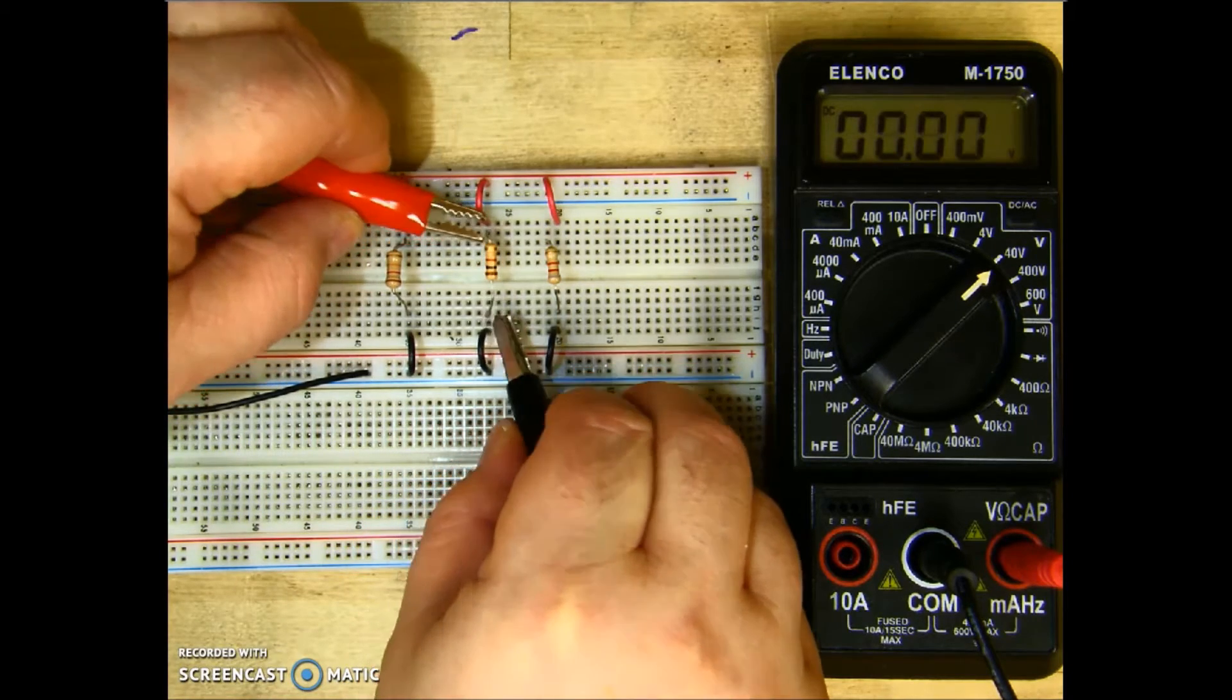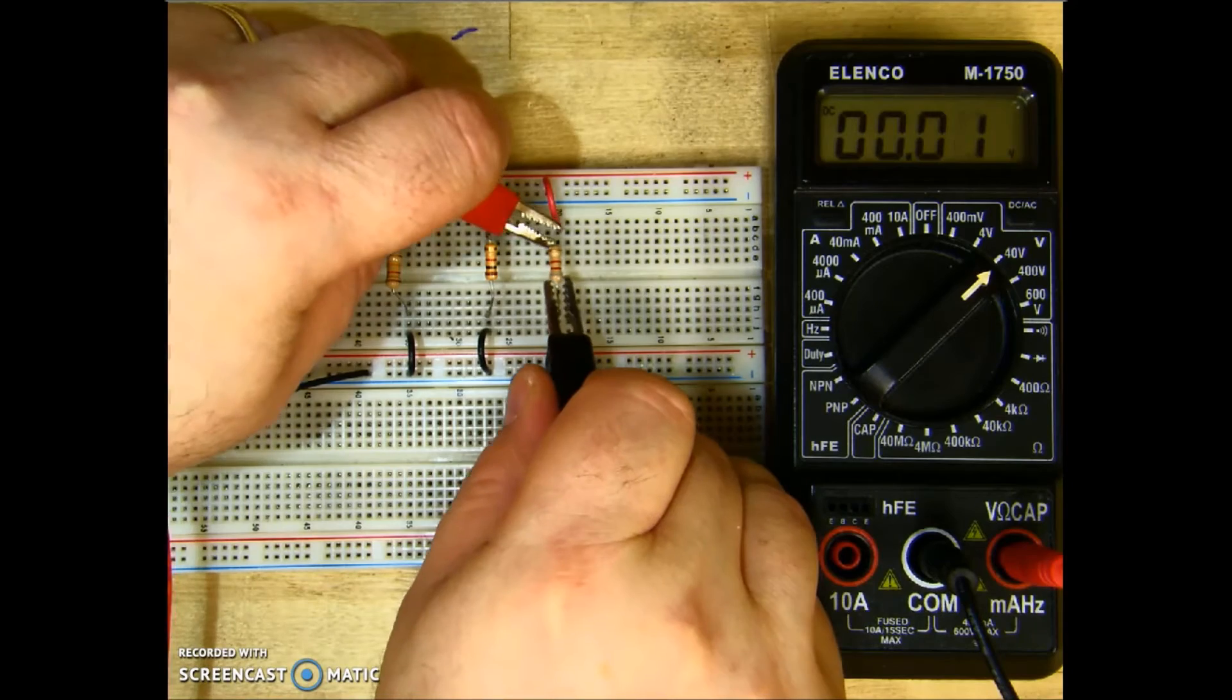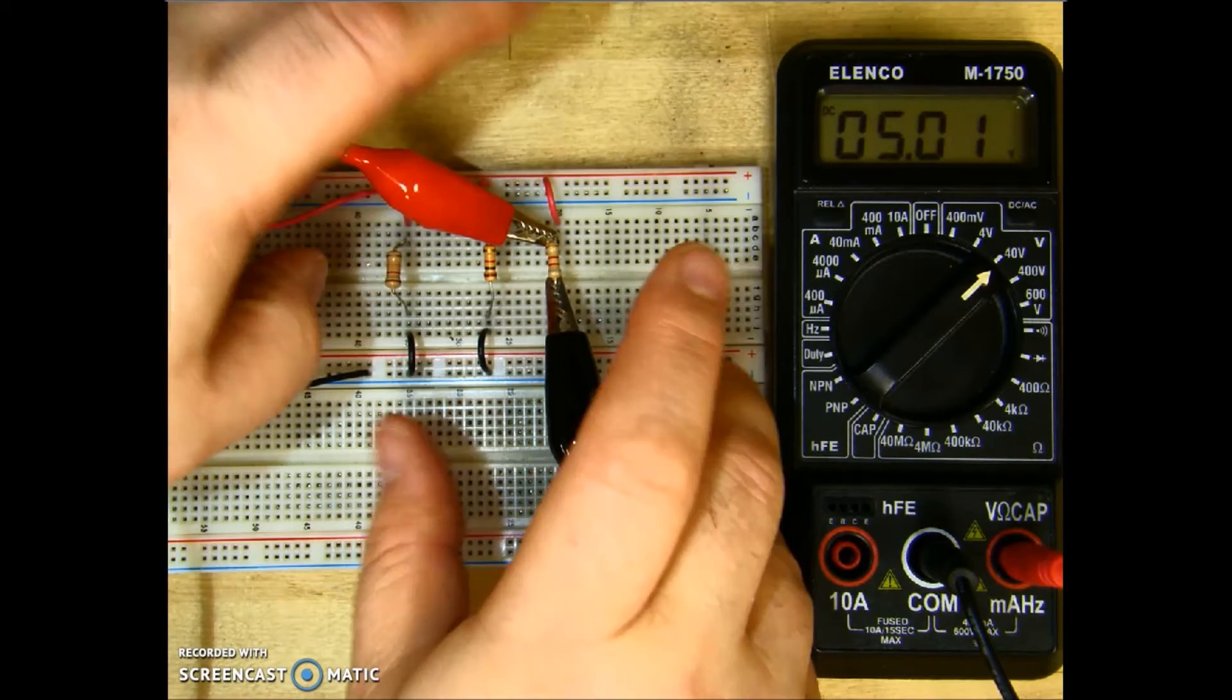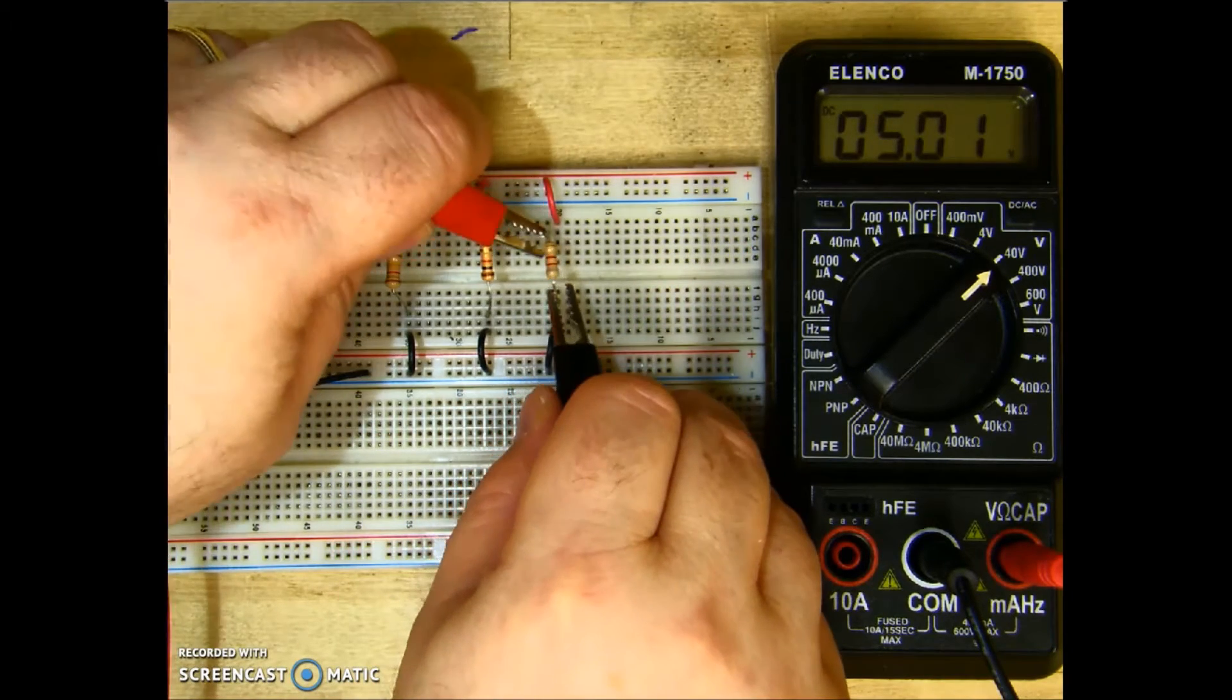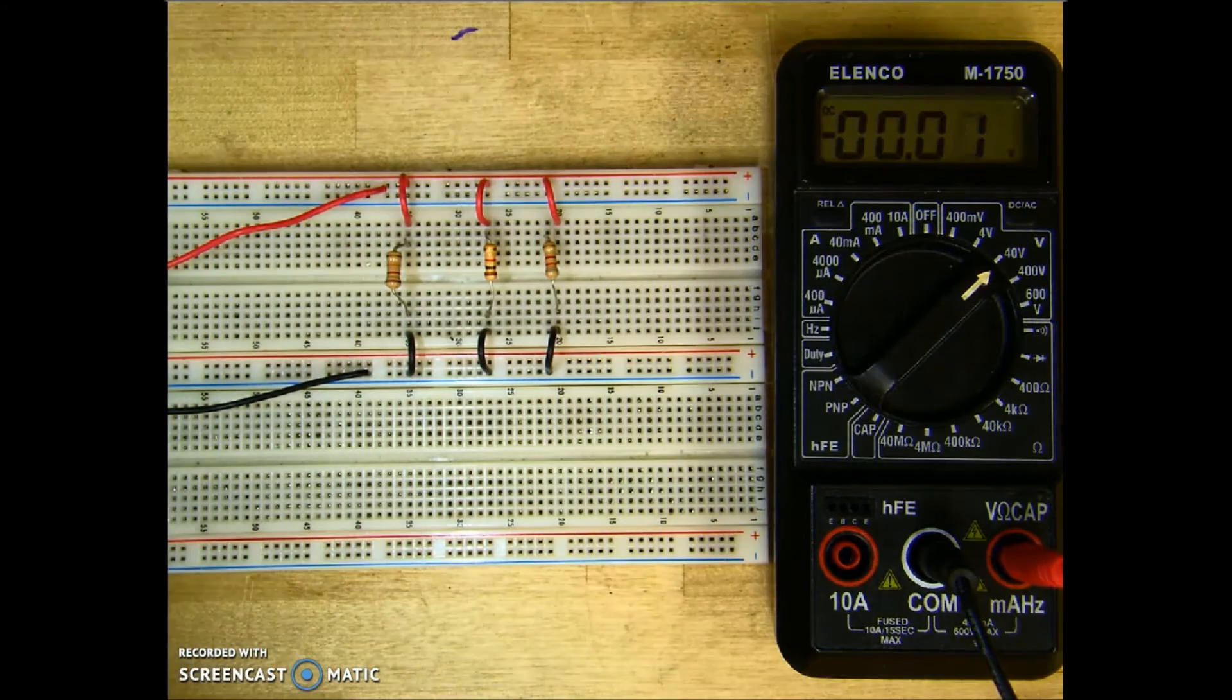And then the voltage for R3, 5.01. So that's how we measure voltage in the parallel circuit.